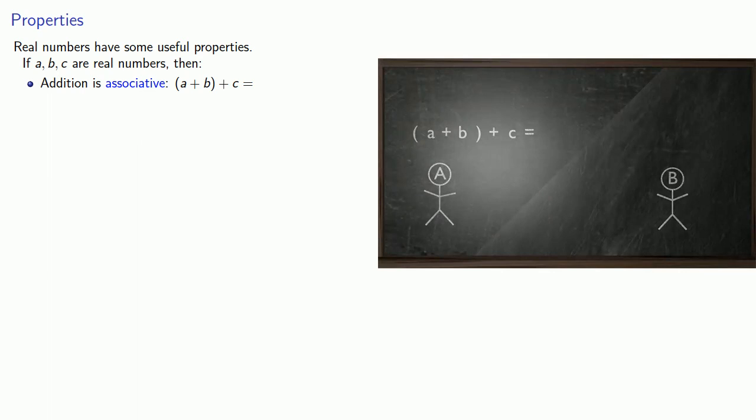And that means if we have an addition like a plus b plus c, we can add the first two things together, a plus b, or we can add the second two things together, b plus c, and we get the same result.